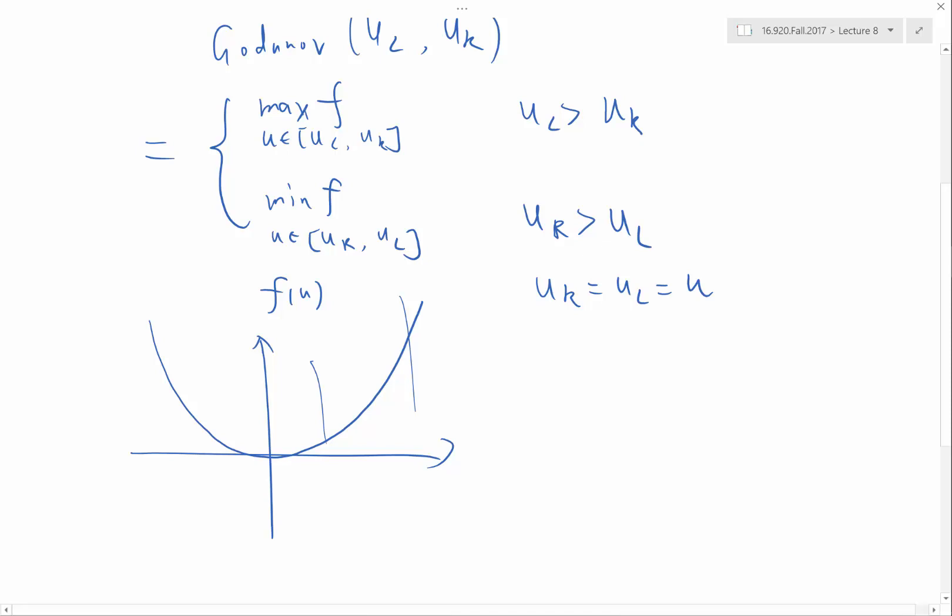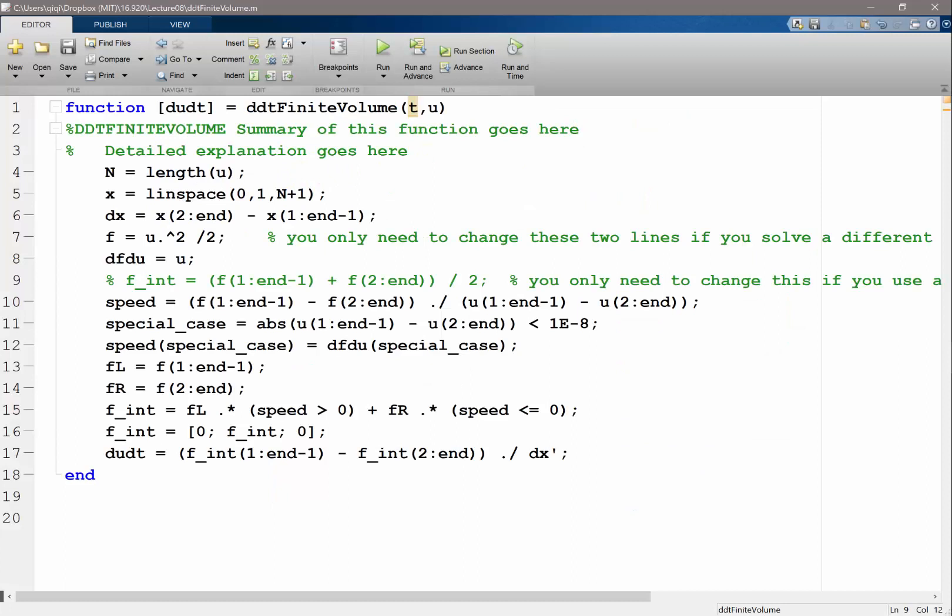Taking the minimum is a little bit tricky. We basically want to have a special case. If the interval includes the point 0, then the minimum is always 0. If the interval does not include the point 0, then it's taking the minimum between these two different values. So basically, we have a few cases.